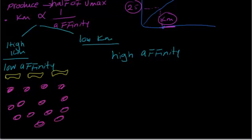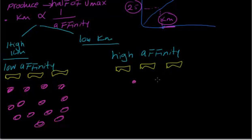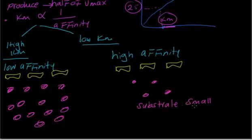On the other hand, low Km: the number of enzymes is the same — the number of enzymes depends on Vmax, which we covered already. Low Km means you will have just a few substrates — one, two, three, maybe four. So here the substrate concentration is small, just a few.